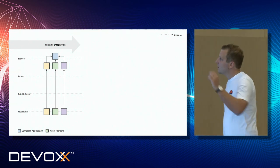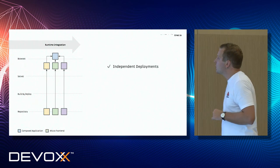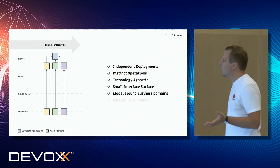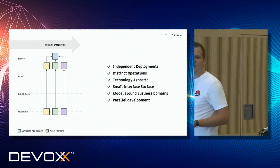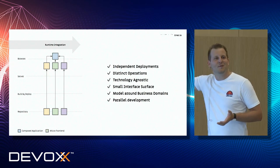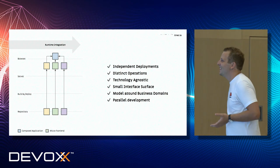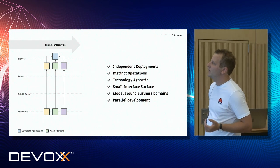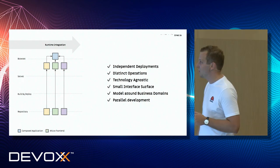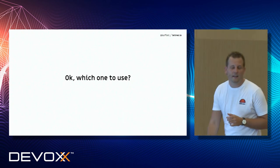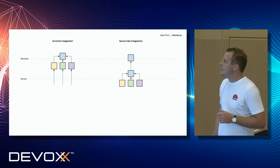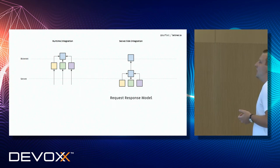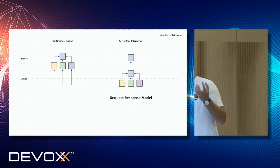Running out of time — let's go quickly. Runtime integration gives us independent deployments, distinct operations, technology agnosticism, small interface surfaces, business domain modeling, and parallel development support. Both server-side integration and runtime integration fulfill all six advantages. The big advantage of server-side integration is that we still follow the classical request-response model. The interaction between verticals is done on the backend — every time you want something, you go to the backend.